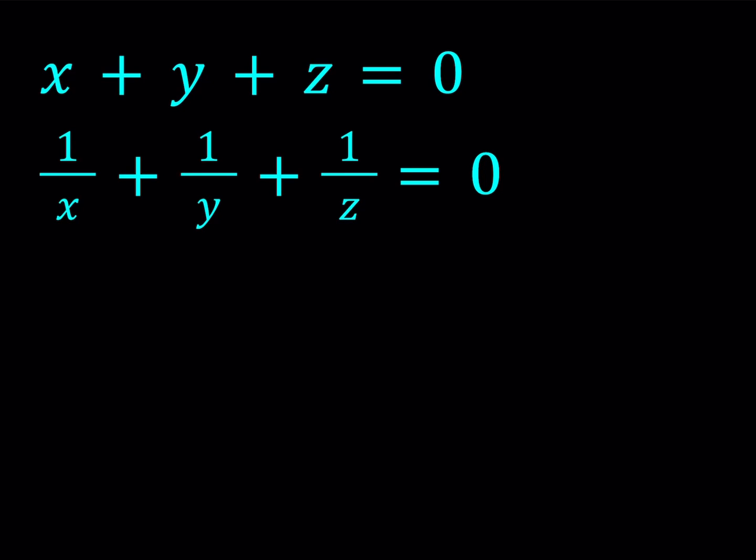Hello everyone, in this video we're going to be solving a system of equations. We have x plus y plus z equals 0 and 1 over x plus 1 over y plus 1 over z equals 0. We're looking for real solutions.